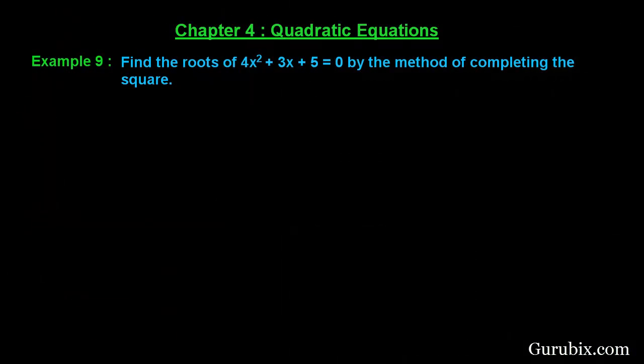Welcome friends, let us solve example number 9 of chapter 4. The example says find the roots of the quadratic equation 4x square plus 3x plus 5 equals 0 by method of completing the square.